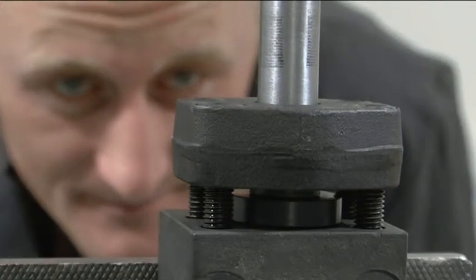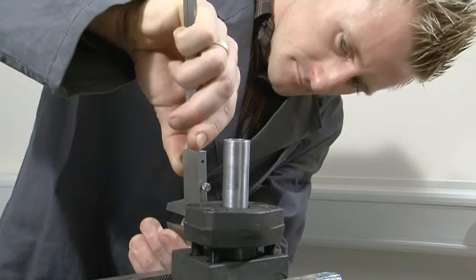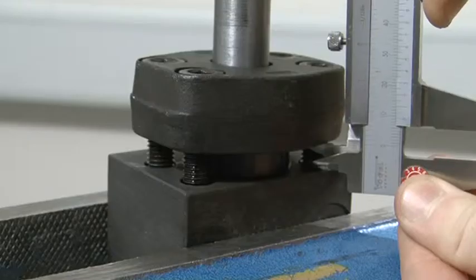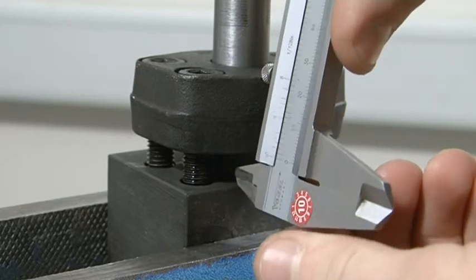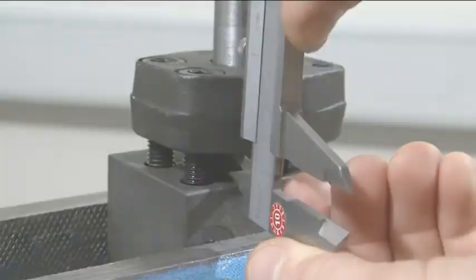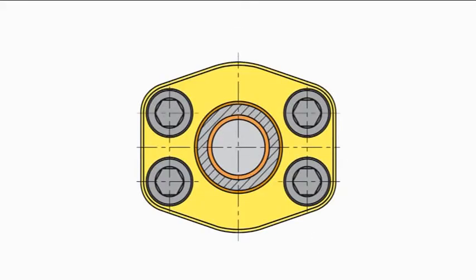Parallelism of the components must be checked after final assembly. To do this, measure the distances to each other at three points, offset by 120 degrees.